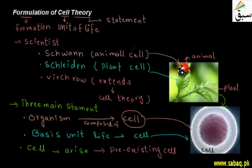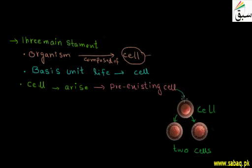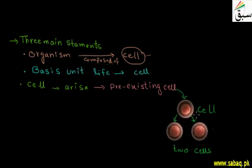To illustrate this, we have a diagram: one cell divides to make two cells. This proves that cells arise from pre-existing cells. These are the three main statements of cell theory — that organisms are made of cells, the cell is the basic unit of life, and cells come from existing cells. This cell theory was published by Schleiden, Schwann, and Virchow, and is worldwide recognized today.